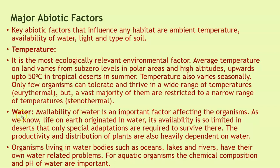The next important factor is water. Availability of water is an important factor affecting organisms. Life on earth originated in water, and its availability is so limited in deserts that only special adaptations allow survival there. The productivity and distribution of plants are heavily dependent on water. Organisms in water bodies such as oceans, lakes and rivers face their own water-related problems. For aquatic organisms, the chemical composition and pH of water are very important. Some organisms are tolerant of a wide range of salinity — called euryhaline — while others restricted to a narrow range are called stenohaline. Many freshwater animals cannot live in seawater and vice versa because of osmotic problems.